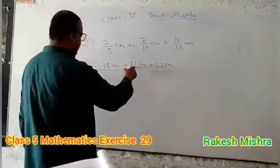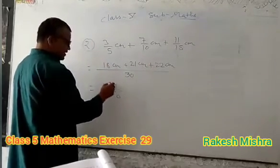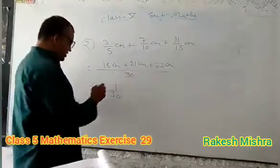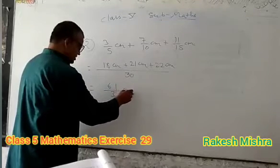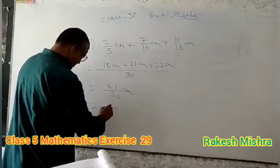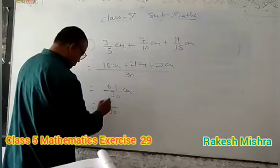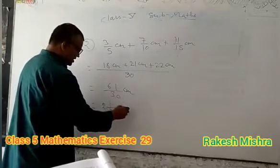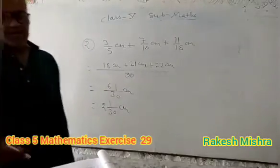Now finding the LCM: 15, 10, 8, 5, then factoring down to get 30. Adding the numerators: 18 plus 21 plus 22 equals 61. So the answer is 61 by 30 cm.